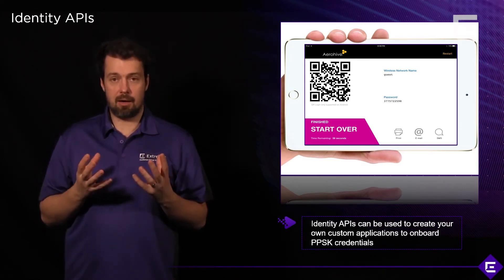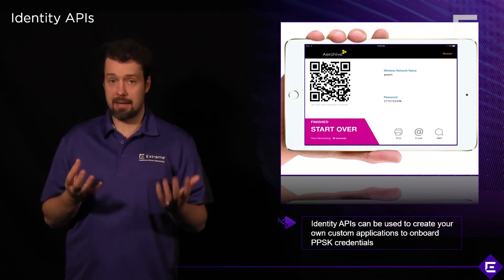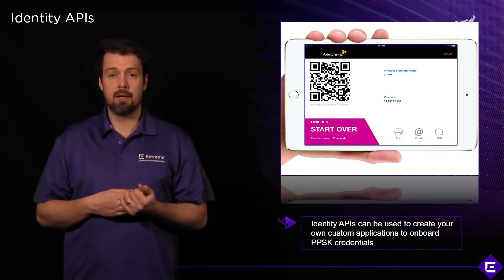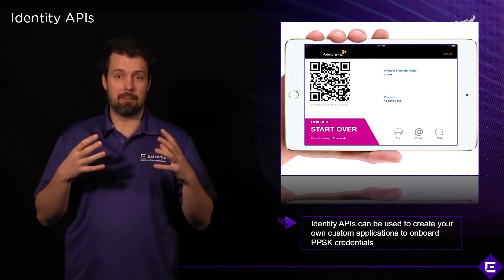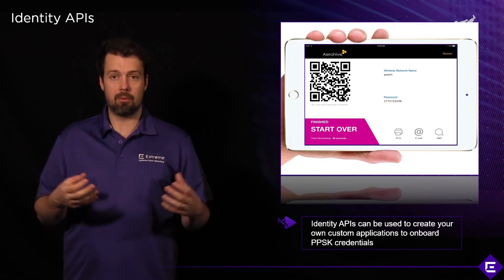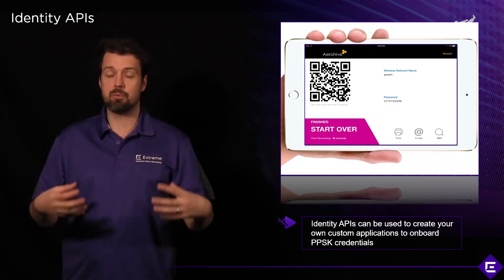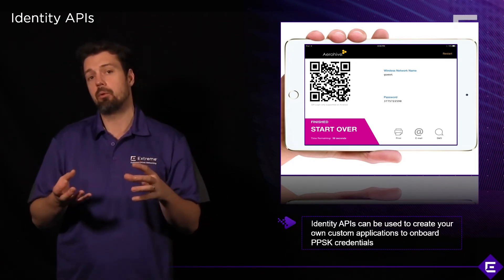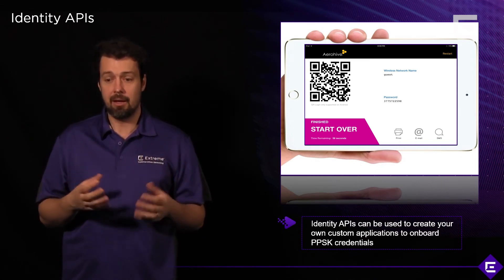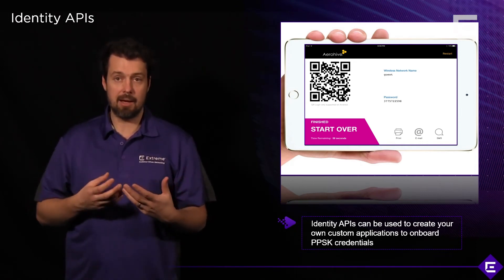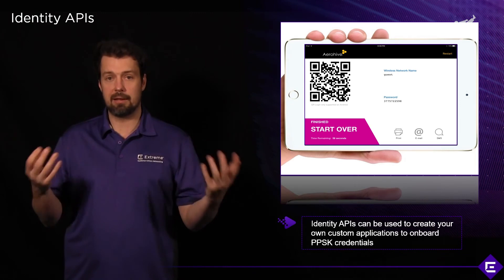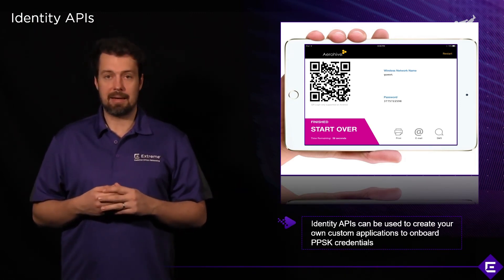The use cases for PPSK identity APIs are quite extensive: onboarding IoT devices, hospitality for hotel guests, and BYOD devices — either through a purpose-built app or a captive web portal solution natively built into Extreme Cloud IQ. You can use pre-configured captive portal workflows available in Extreme Cloud IQ, or build your own applications and workflows using the identity APIs. For more on developing with the APIs, visit developer.extremecloudiq.com.